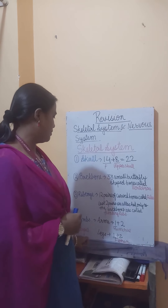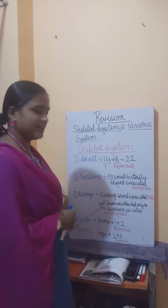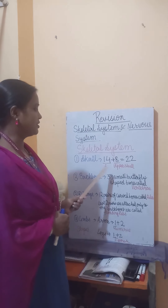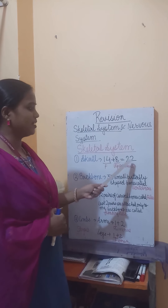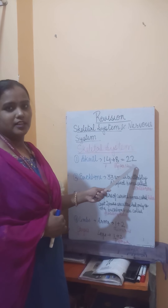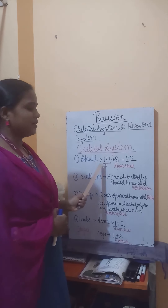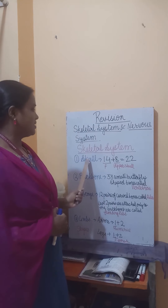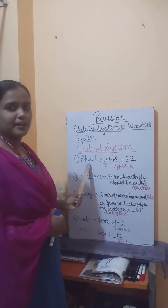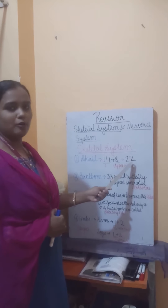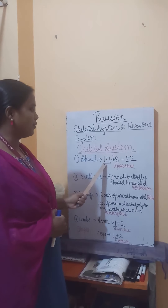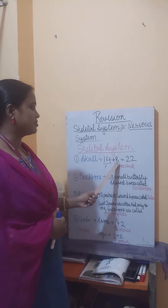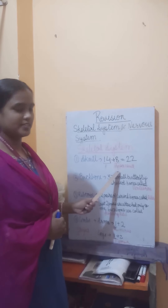The four parts are: skull, backbone, ribcage, and limbs. The skull is made up of 22 bones, out of which 14 bones are present in the face region whereas 8 bones are present in the upper skull — that's 14 plus 8 equals 22.